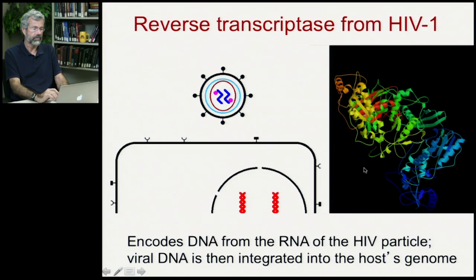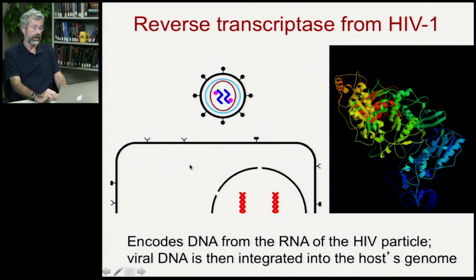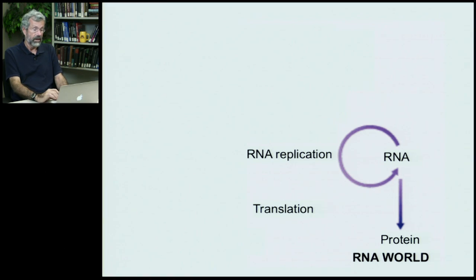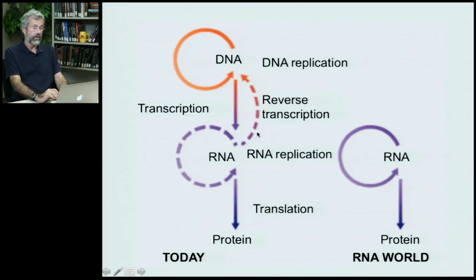But why is this step so important? Remember, reverse transcriptase — as we saw in the last lecture — is how the RNA virus HIV, once it gets inside the cell, can manufacture DNA from its RNA. This encodes DNA from the RNA of the HIV particle, which is then integrated into the host's genome, which is all DNA. So in the early world of RNA only, RNA is capable of self-replication and proteins would eventually have been manufactured through translation of the RNA. But with the addition of reverse transcriptase and DNA, we then get transcription back to RNA, and then translation of RNA down to protein — the modern synthesis of how living things manufacture their proteins today.